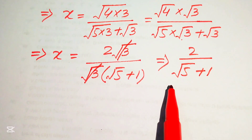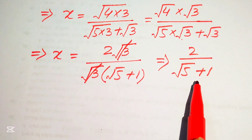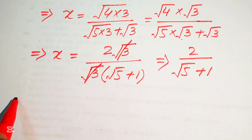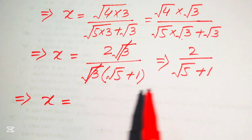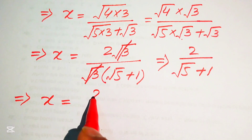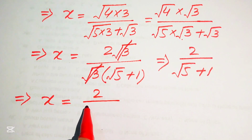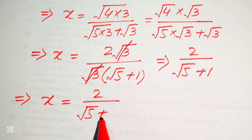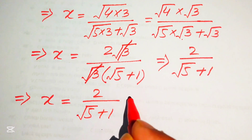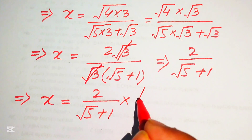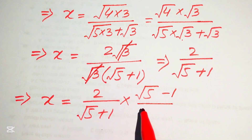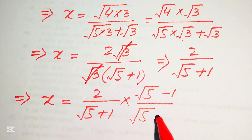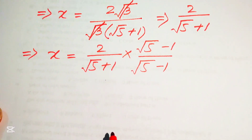Now we rationalize the denominator. We multiply by (√5 − 1)/(√5 − 1), giving us 2(√5 − 1) in the numerator, divided by (√5 + 1)(√5 − 1).